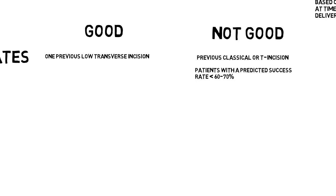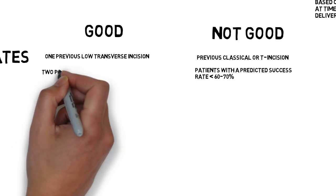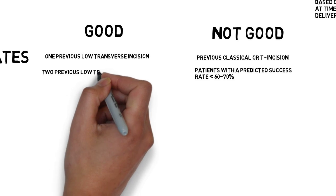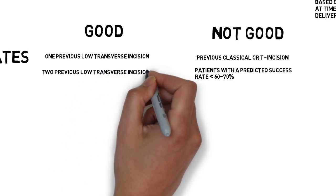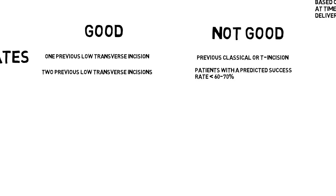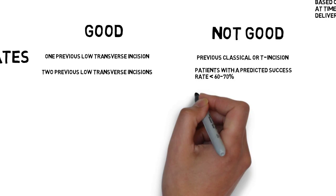Two large studies offer some conflicting results. One found the risk of uterine rupture similar in women with one versus multiple sections, but the other showed a risk of uterine rupture of 0.9% with one and 1.8% with two sections. Both studies found increased morbidity with more than one section, but the differences were small.